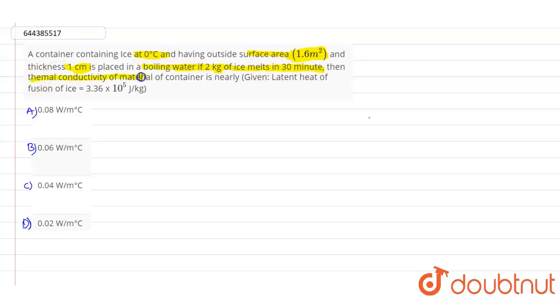Then thermal conductivity of material of container is nearly. Here we need to find out the value of the thermal conductivity of the material. Also given, the latent heat of fusion of the ice value as 3.36 into 10 power 5 joules per kg.